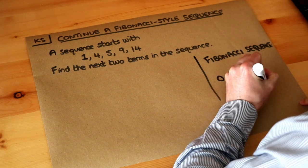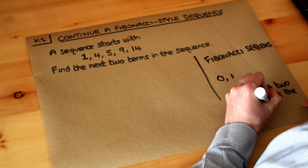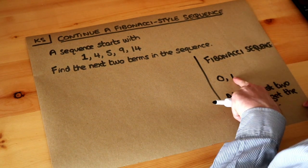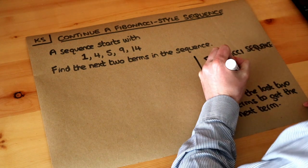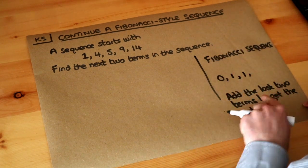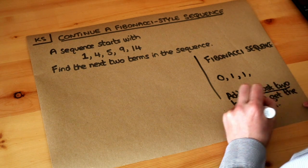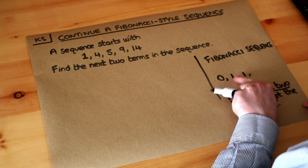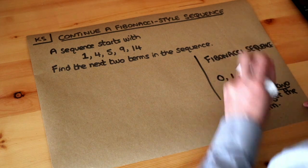So add the last two terms to get the next. So if we want the next term, you add the last two terms. 1 plus 0 is 1, so the next term will be 1. And then we add the last two terms. So the last two terms are 1 and 1. 1 plus 1 is 2, so that gives you the next term.